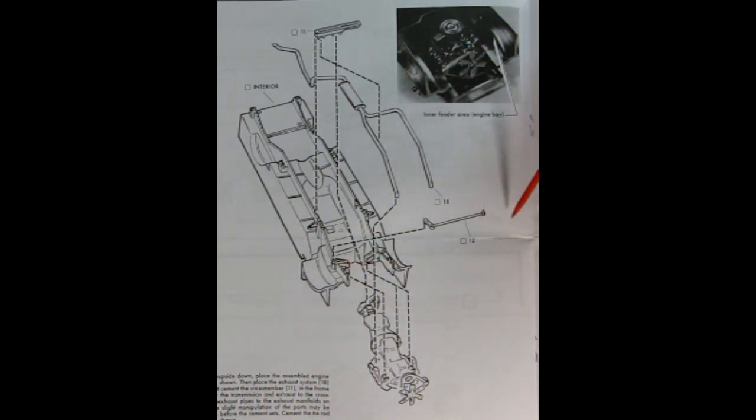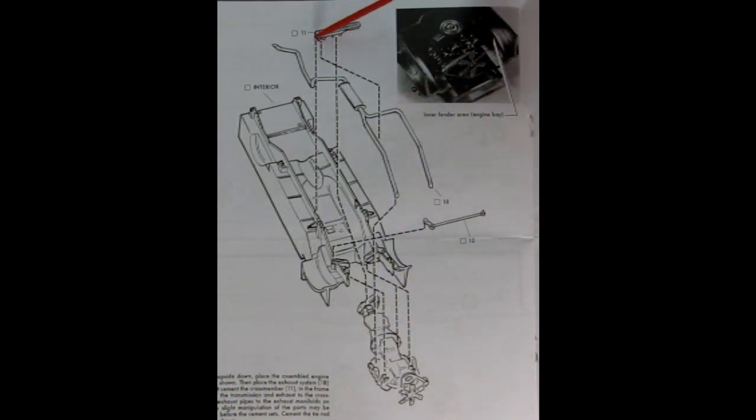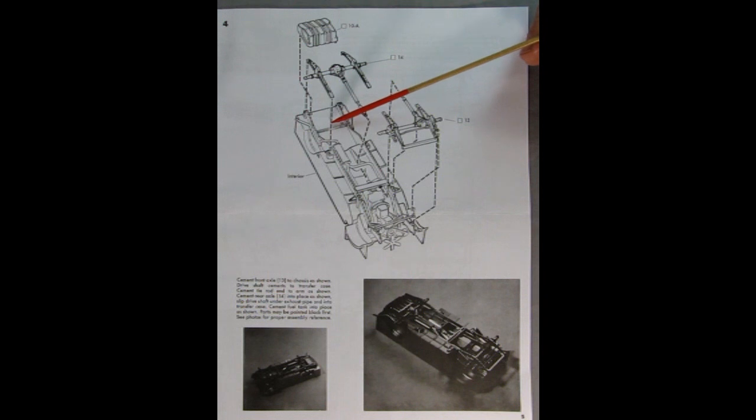Step three shows the chassis assembly with our interior chassis tub being flipped upside down. The engine gets glued up onto these points. And then here you have your tie rod for your steering. After you attach that you can add in your exhaust pipes here as well as the transmission support brace right here. Then up here it's got this nice photograph and details telling you the inner fender area. This is what it looks like in the engine bay.